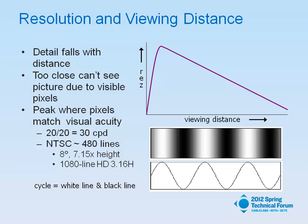Detail falls with distance. As you get away from your television set, you can make out less detail. But it also falls if you get too close, because then it's like not being able to see the forest for the trees. So the peak is going to be where the pixels match your visual acuity, and every viewer has different visual acuity. A viewer with 20-20 vision would have 30 cycles per degree or 60 lines per degree.